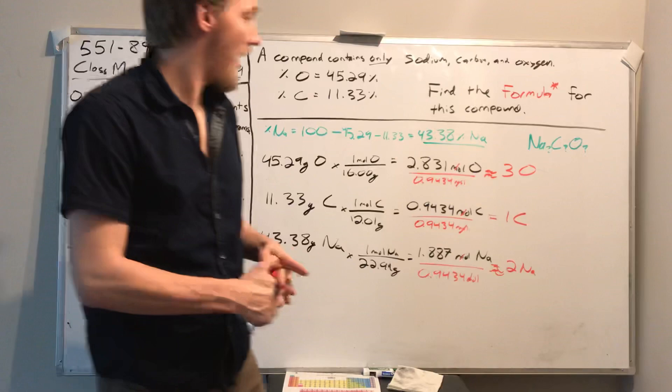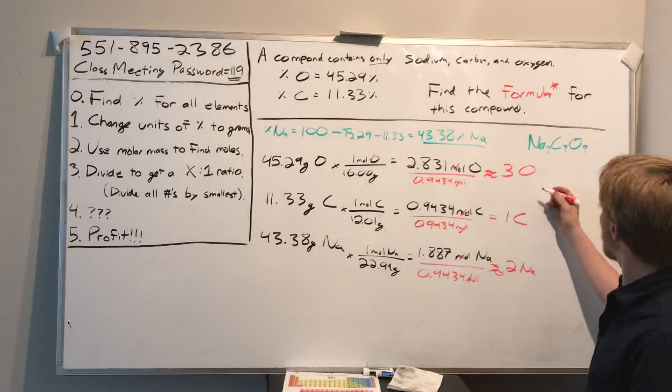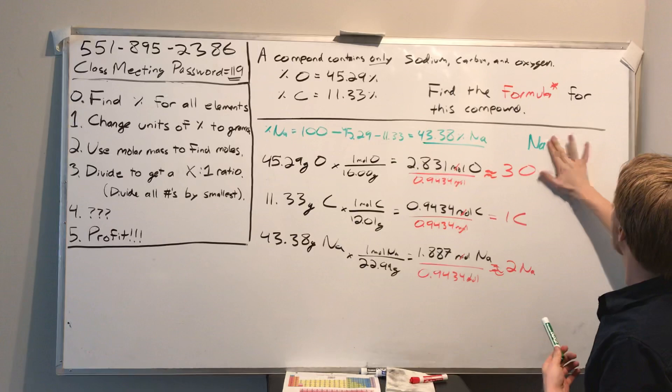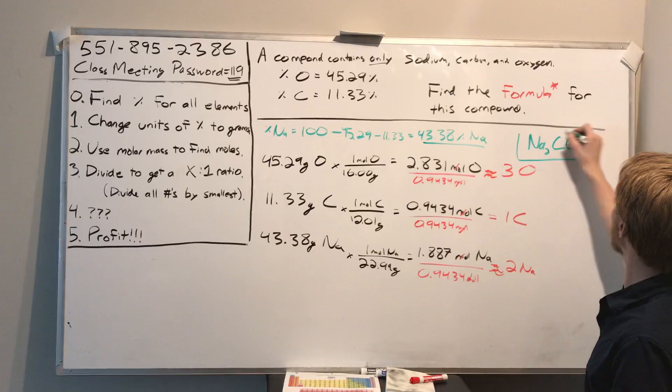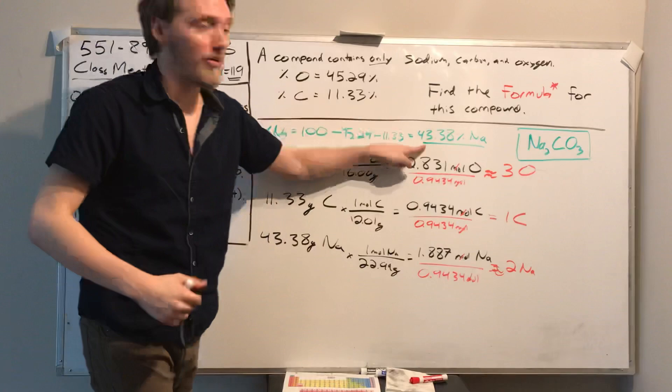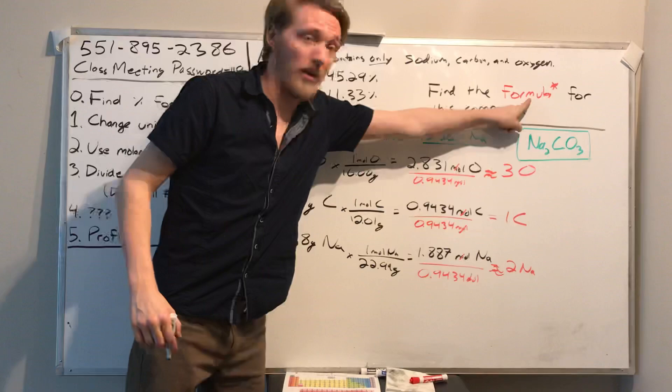So the ratio is 1 carbon : 2 sodium : 3 oxygen. That gives us the formula Na2CO3 — sodium carbonate. This was the percent composition of sodium carbonate, and we used these steps to find it.